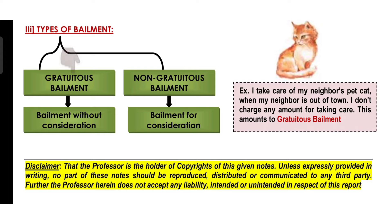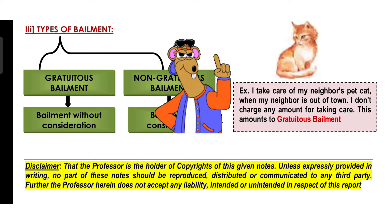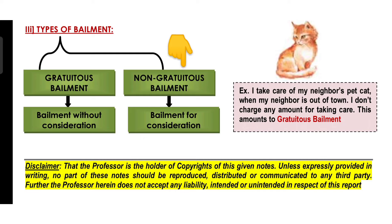In bailment, there are two types. One is called Gratuitous Bailment and the other is called Non-Gratuitous Bailment. When the contract of bailment is created for free, or without consideration, that is called Gratuitous Bailment. And when the contract of bailment involves consideration, that is called Non-Gratuitous Bailment. Now, in the tailor example, does that tailor stitch your shirt for free? No. So that bailment is referred to as Non-Gratuitous Bailment.